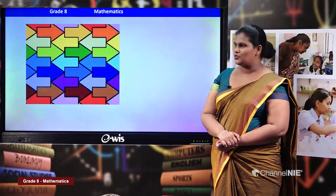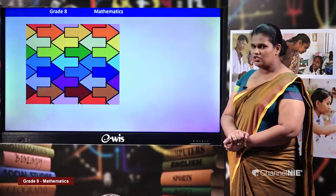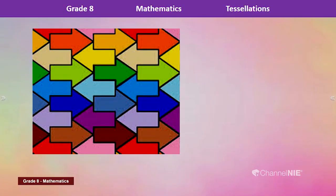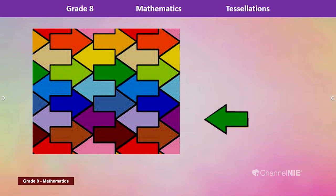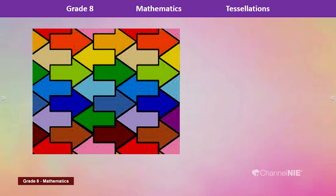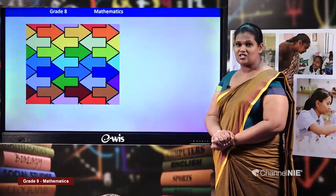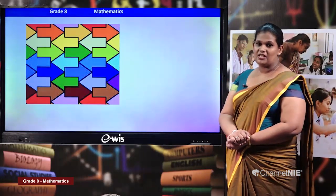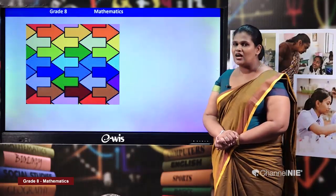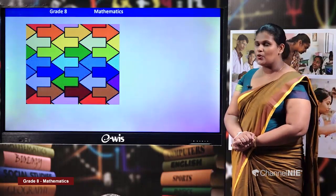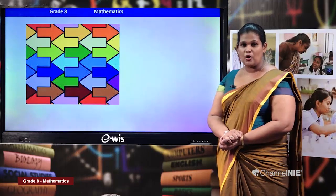Now you might think two different shapes are used in this pattern, but let's see — this is the shape used. The other shape you see is actually the same shape rotated. So throughout this pattern they have used the same shape in many different colors. Therefore this is also an example of pure tessellation.